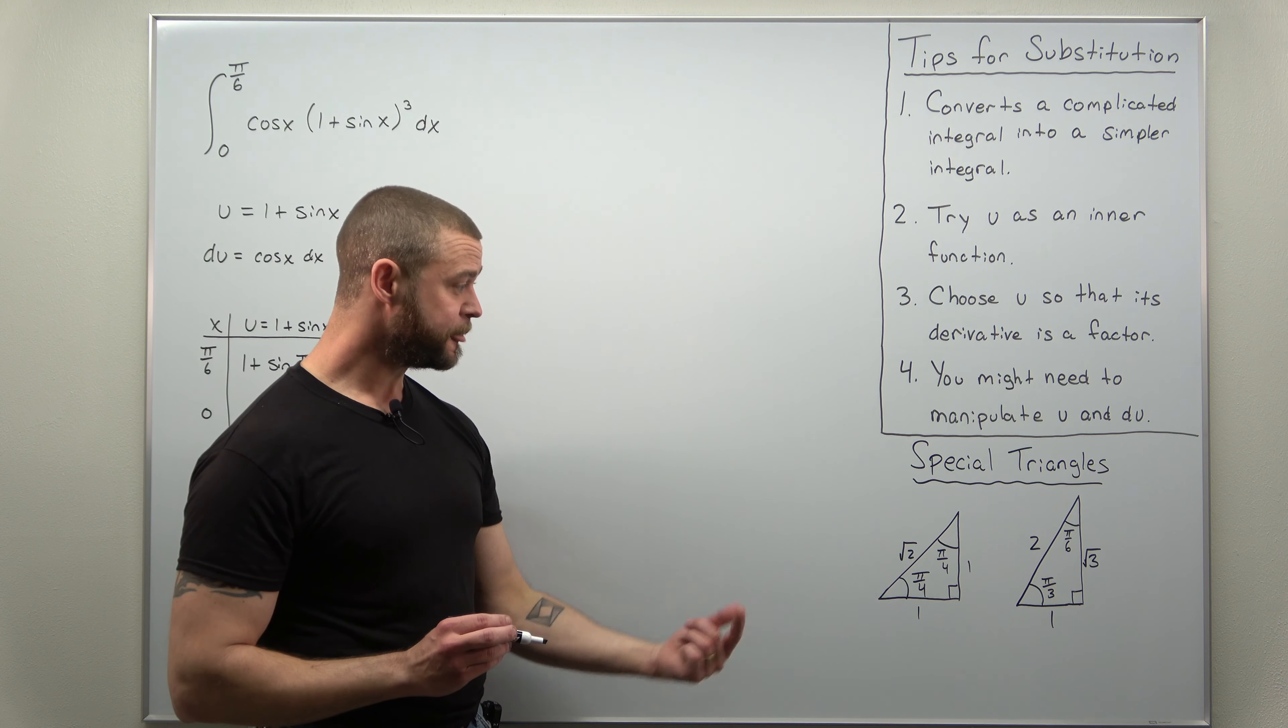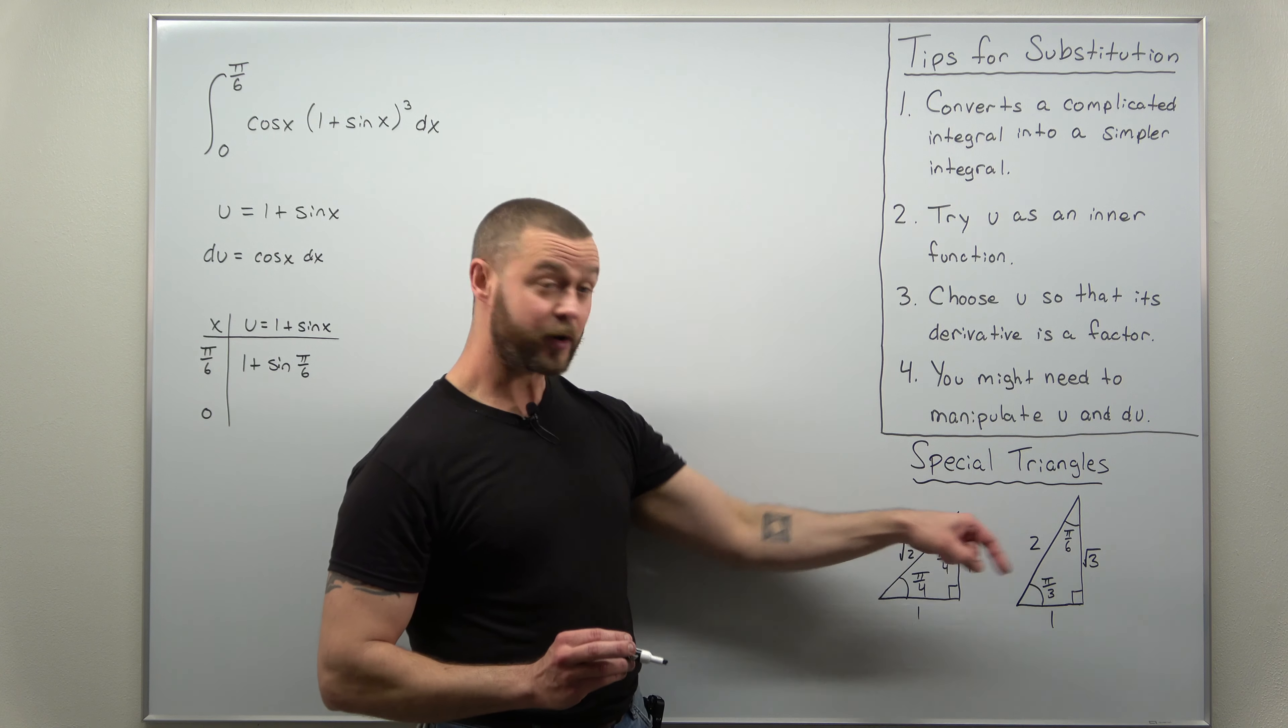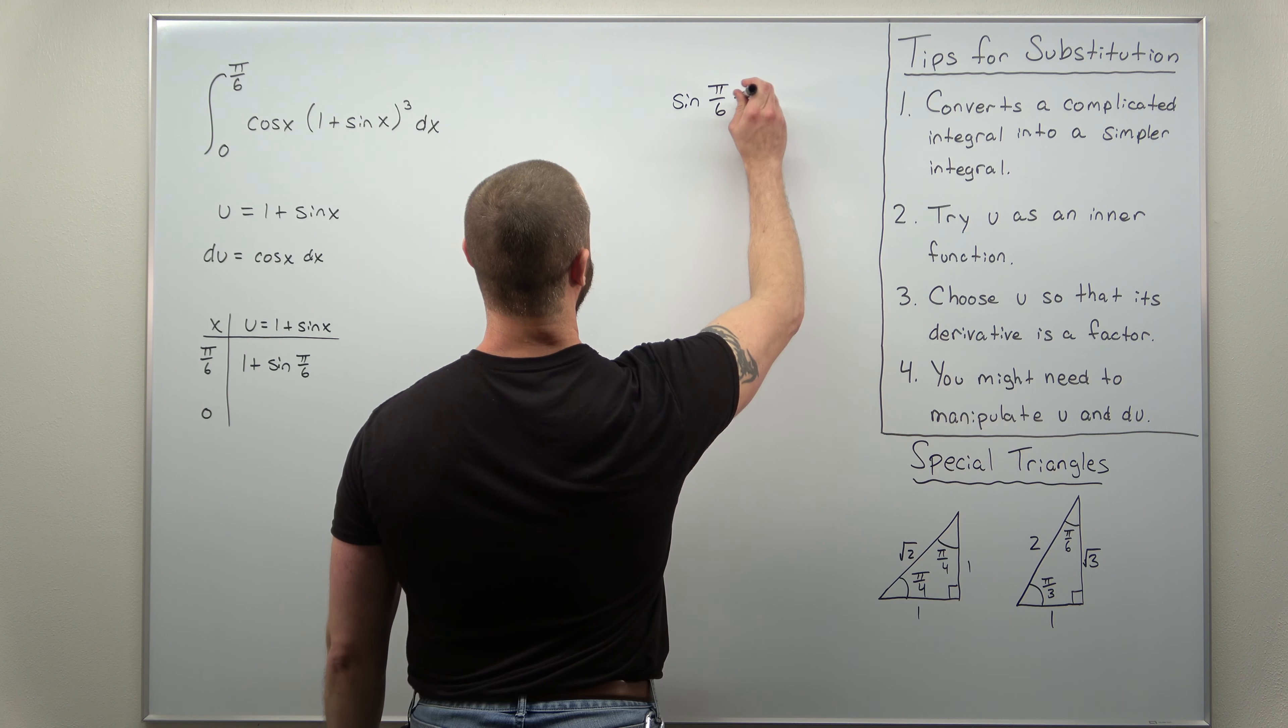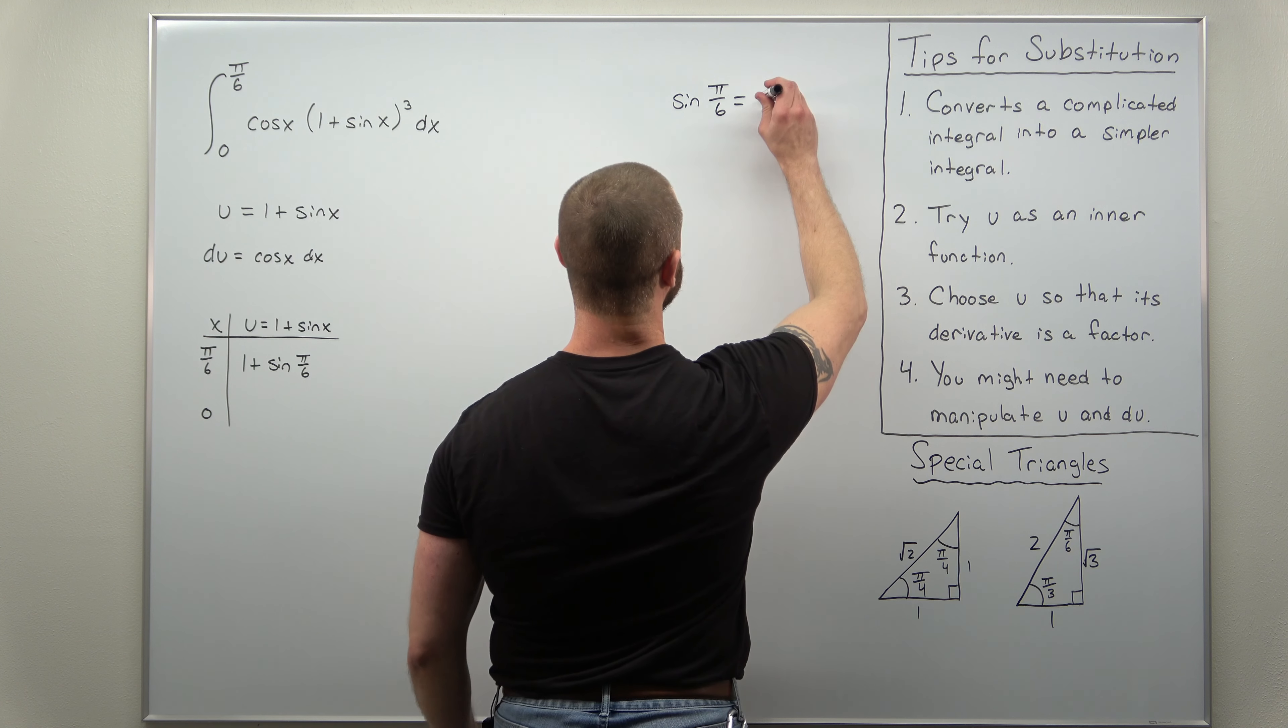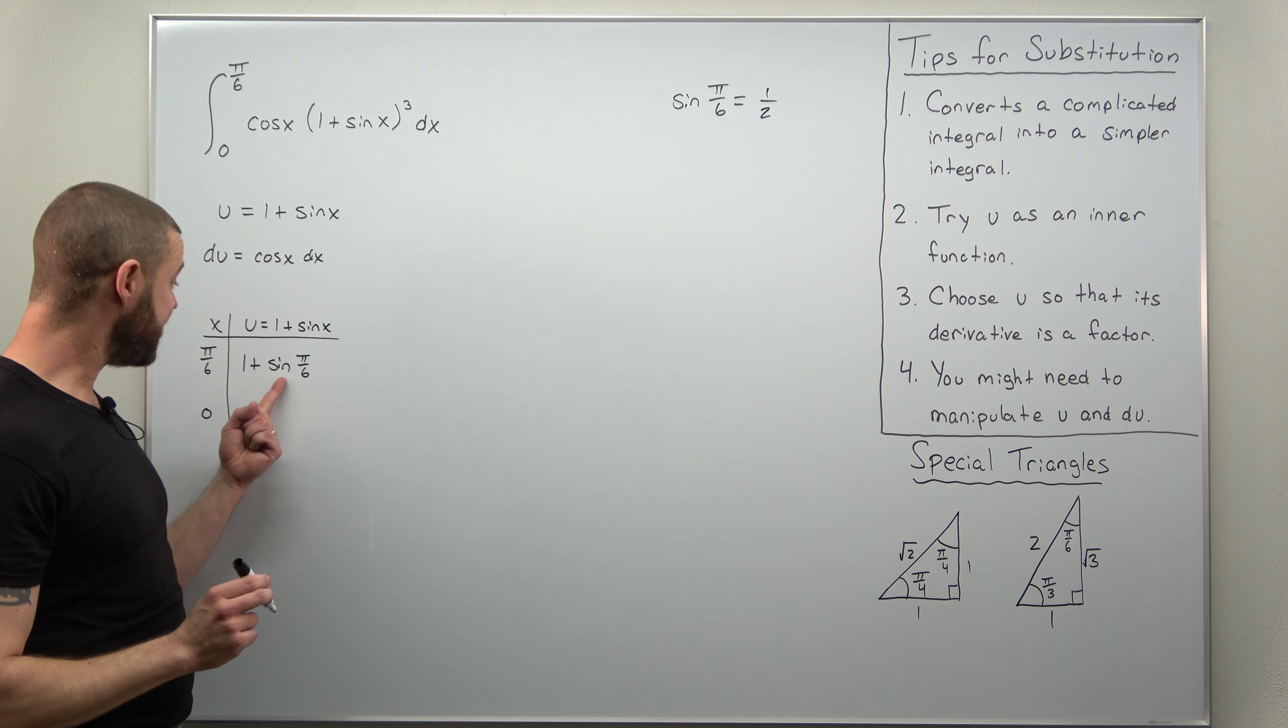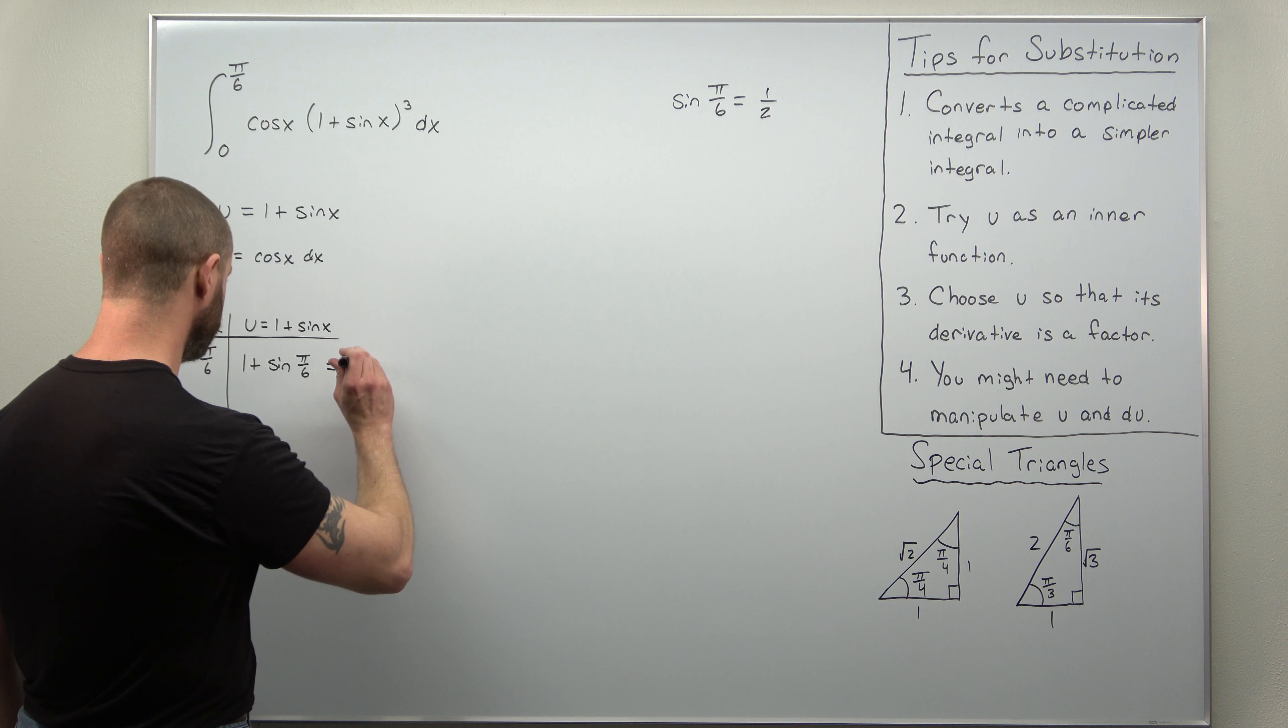So if we go to our angle π over 6, sine is opposite over hypotenuse, so sine of π over 6 comes out to one over two, or a half. So if we make use of that here, sine of π over 6 is a half, a half plus one, our new upper u limit should be three halves.